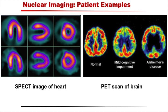Here are some examples. The picture on the left is an image of a heart obtained by SPECT imaging after a patient has been given a radioactive drug. From this image, the doctors can tell if the heart is functioning normally. The picture on the right includes an image of a brain obtained by a PET scan. As you can see in the picture, this PET scan can be used to detect mild cognitive impairment and Alzheimer's disease.